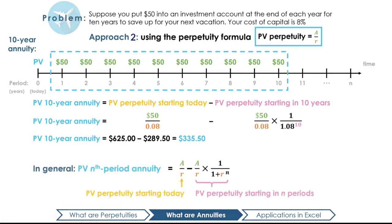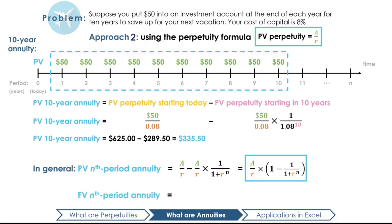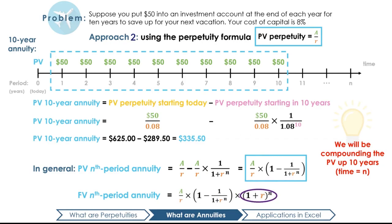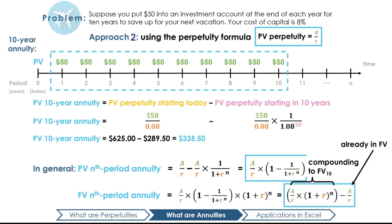We can remove like terms and express this formula as a over r times (1 minus 1 over (1 + r) to the power of n). Unlike perpetuities, we can solve for the future value of an annuity. You can choose to apply the future value formula to the present value we just calculated, or adapt the annuity formula directly. To solve for the future value, we simply multiply our present value by (1 + r) to the power of n. Applying this to the formula, we're left with a over r times (1 + r) to the power of n, minus a over r. This compounding gives the first term in future dollars, while the second term is already expressed in future dollars. So in 10 years, you'll have $724 to spend on your vacation. You will see the formula rearranged in several different ways, but don't be alarmed — the logic is always the same. Just use the version of the formula you're most comfortable with.